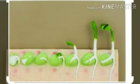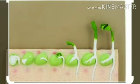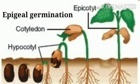A sprouting seed first gives out a radicle which becomes the root of a new plant. Then arises the plumule which becomes the shoot system of the new plant. A type of germination in which the seed comes out of the soil during the process of germination is called epigeal germination.